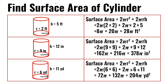Find the surface area of a cylinder where r is 2 feet and h is 5 feet. 2π(2×2) + 2π×2×5. 2×2 is 4; 4 times 2π is 8π. 2×5 is 10; 10 times 2π is 20π. 8π plus 20π is 28π feet squared.